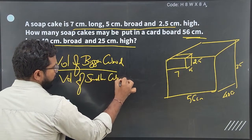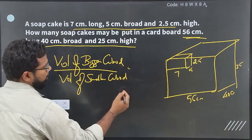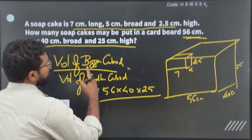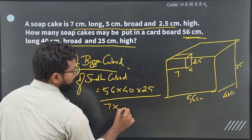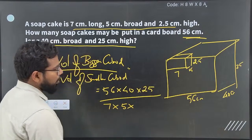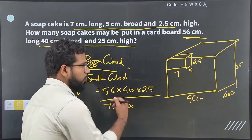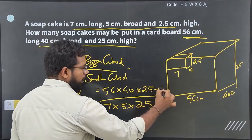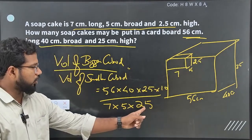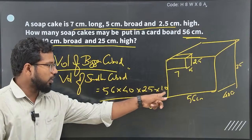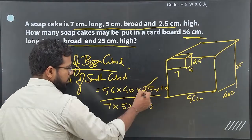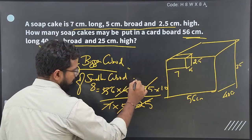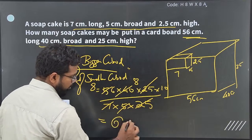The dimensions of the bigger cuboid are 56 × 40 × 25, and the dimensions of the smaller cuboid — the soap — are 7 × 5 × 2.5. Instead of writing 2.5, I am going to write it as 25 divided by 10, to make it easy to cancel everything. The result is 8 × 8 × 10, which is 640 units.